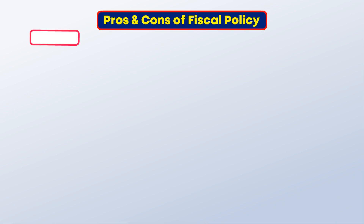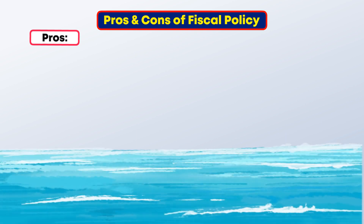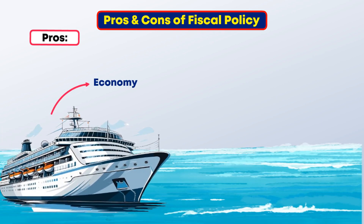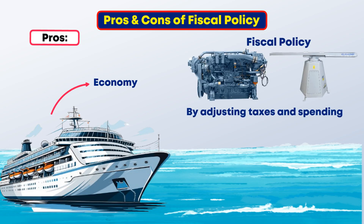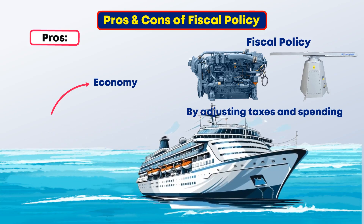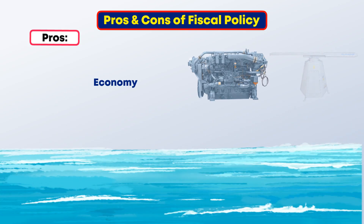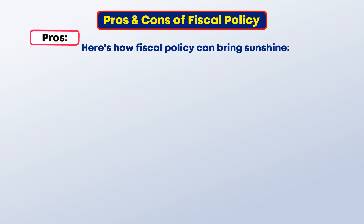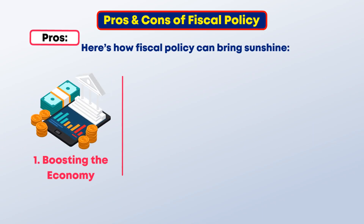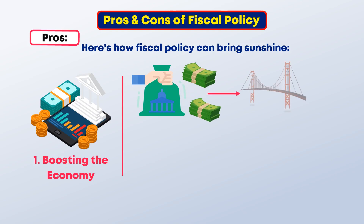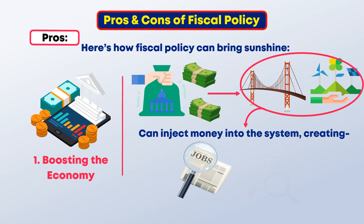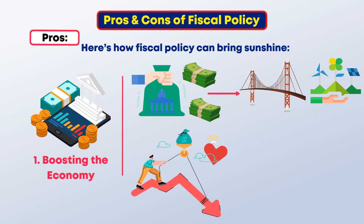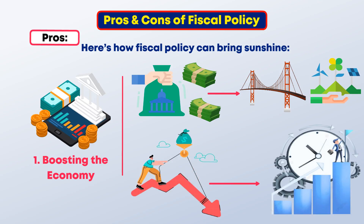Now let's discuss the pros and cons of fiscal policy. First, the pros. Imagine the economy as a vast ocean liner and fiscal policy as its engines and rudder. By adjusting taxes and spending, governments can steer toward calmer waters or navigate choppy seas. One benefit is boosting the economy: increased government spending, like building bridges or investing in clean energy, can inject money into the system, creating jobs and businesses — like throwing a life preserver to struggling sectors.